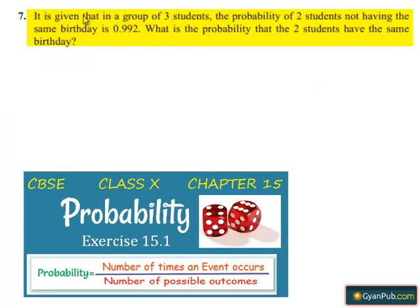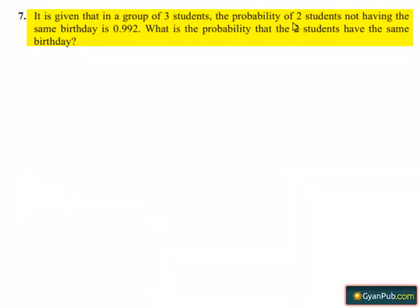Coming to the seventh question, it is given that in a group of three students, the probability of two students not having the same birthday is 0.992. What is the probability that the two students have the same birthday?